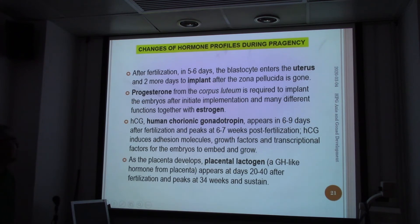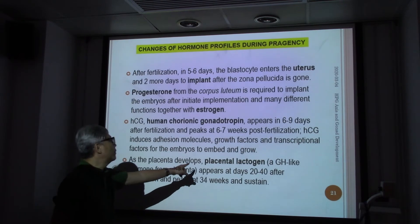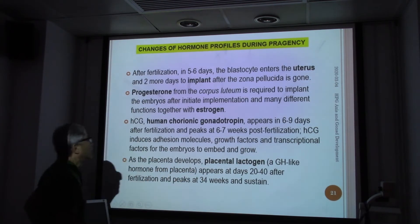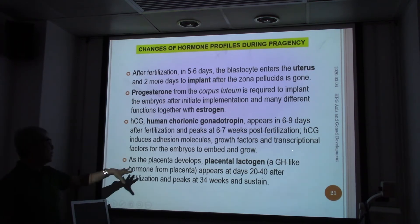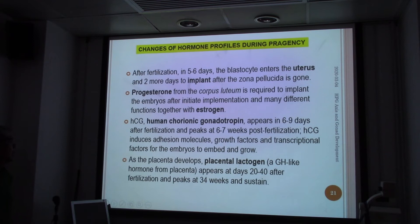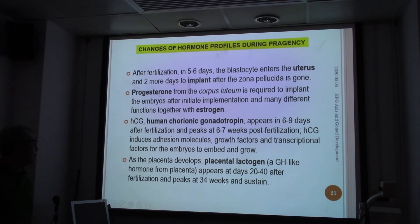We also have the placenta in the uterus, and we have human placental lactogen. This is a growth hormone-like hormone — it has similarity with growth hormone and prolactin, perhaps more toward growth hormone. It appears around 20 to 40 days to stabilize the baby developing inside the womb, and peaks at 34 weeks and is sustained.